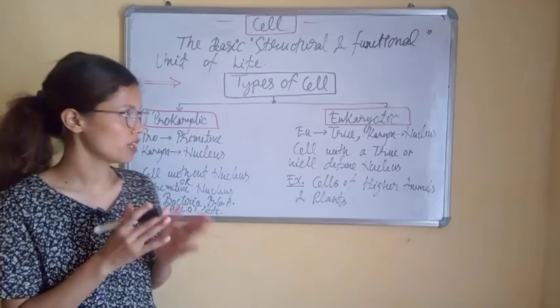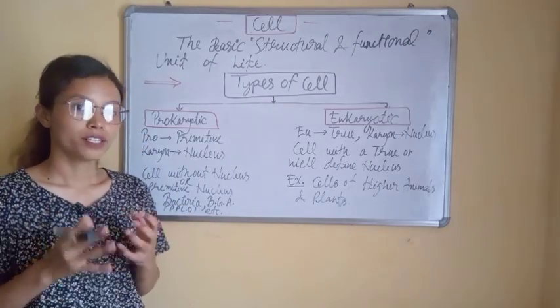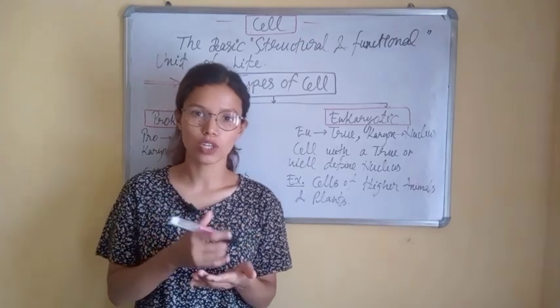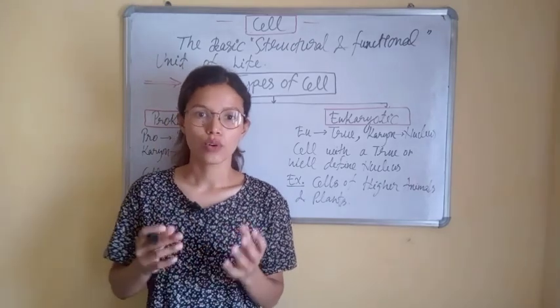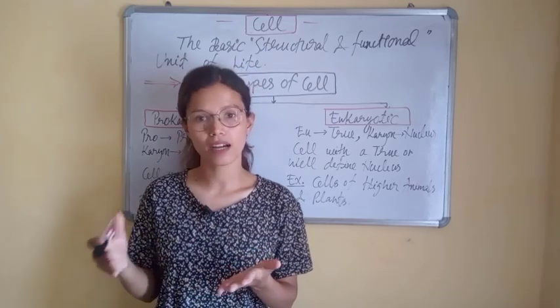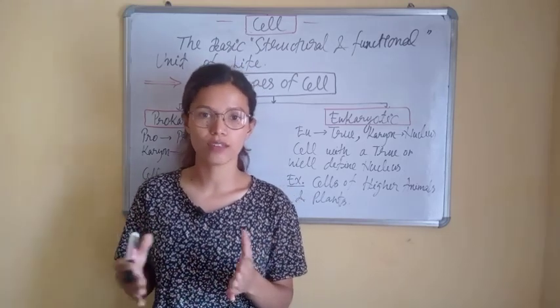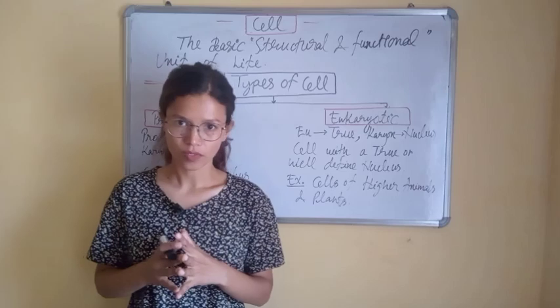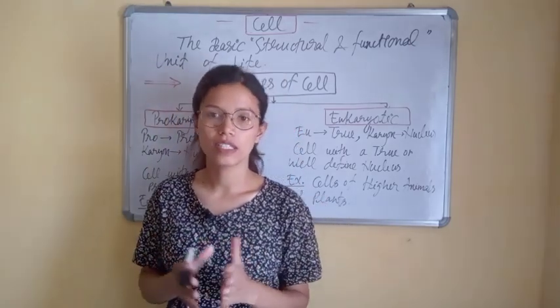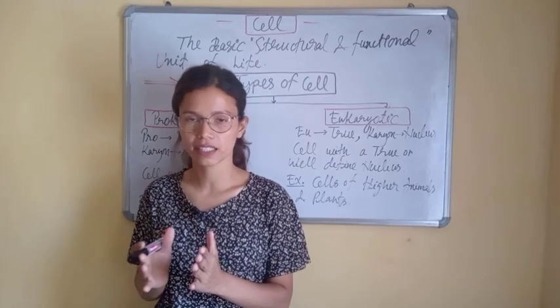When we talk about living cells, the first living cell was discovered by Anthony van Leeuwenhoek. The cell was a bacteria. So in 1674, Anthony van Leeuwenhoek discovered the first living cell, which was a bacterial cell.